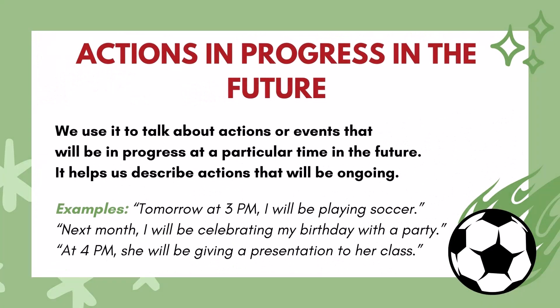Actions in progress in the future: We use it to talk about actions or events that will be in progress at a particular time in the future. It helps us describe actions that will be ongoing. Examples: 'Tomorrow at 3pm, I will be playing soccer.' 'Next month, I will be celebrating my birthday with a party.' 'At 4pm, she will be giving a presentation to her class.'